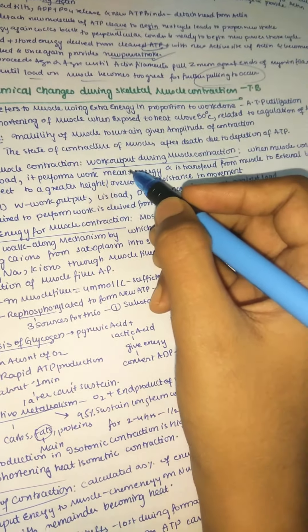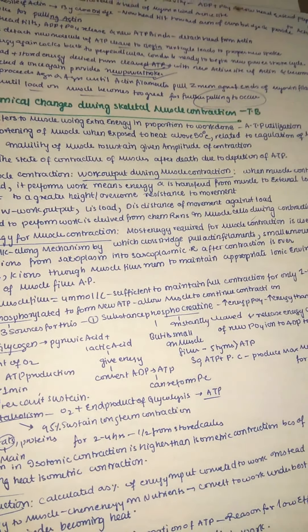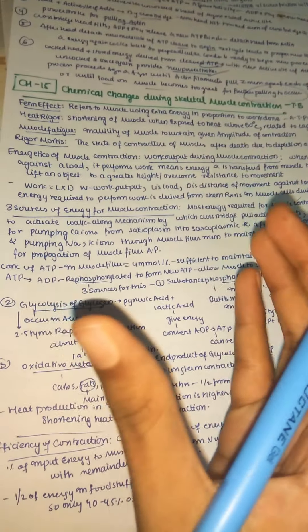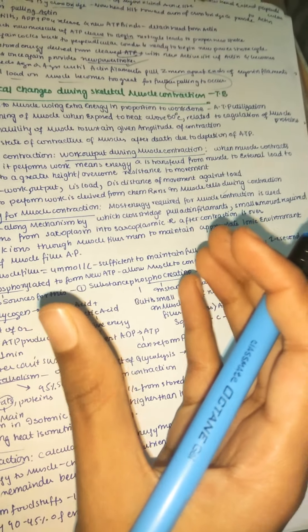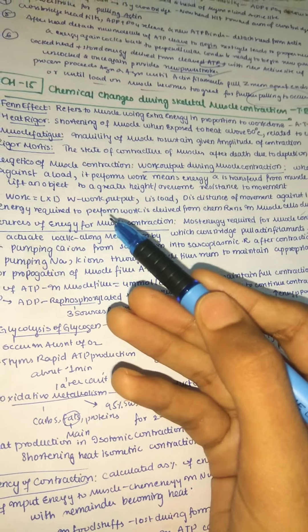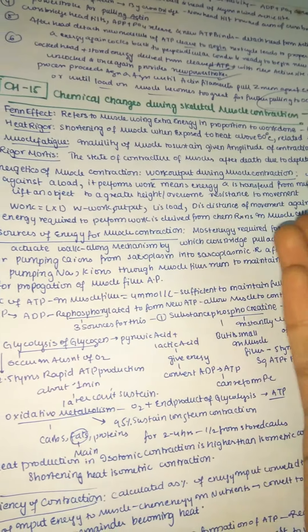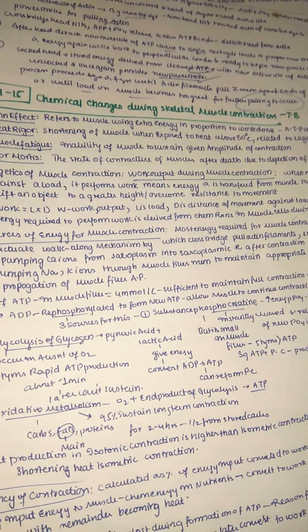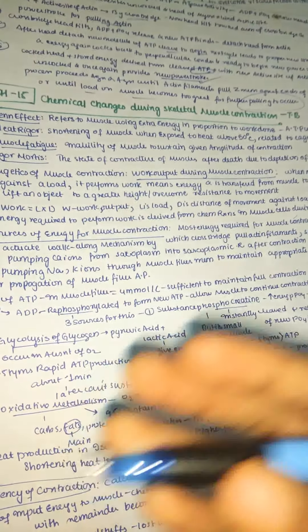Now let us start our topic: energetics of muscle contraction, mainly dependent on work output during muscle contraction. When a muscle contracts, the actin filaments shorten, the Z-disc space gets shorter, and the sarcomere gets shorter. When a muscle contracts against a load, it performs work — energy is transferred from the muscle to the external load to lift an object to a greater height or overcome resistance to movement.